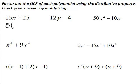So let's pull out a 5. The question becomes: 5 times what gives me 15x? Well, 5 times 3 is 15, so 5 times 3x gives me 15x. Plus, 5 times what number gives me 25? That's also 5. So now we have factored, and this is the answer we were looking for.